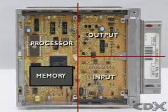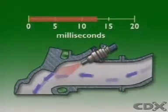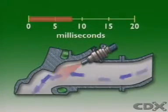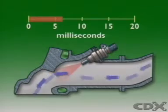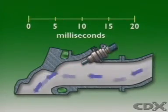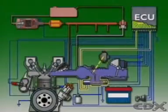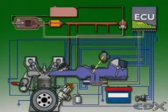The core function of a basic ECU in an EFI system is to control the pulse width of the injector. More sophisticated models also control other functions such as idle speed, ignition timing, and the fuel pump.